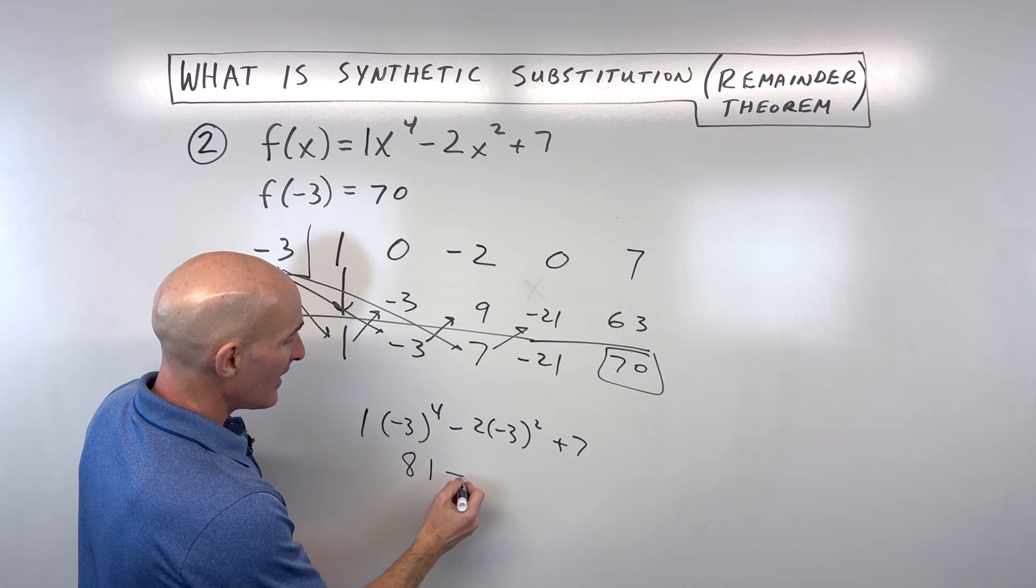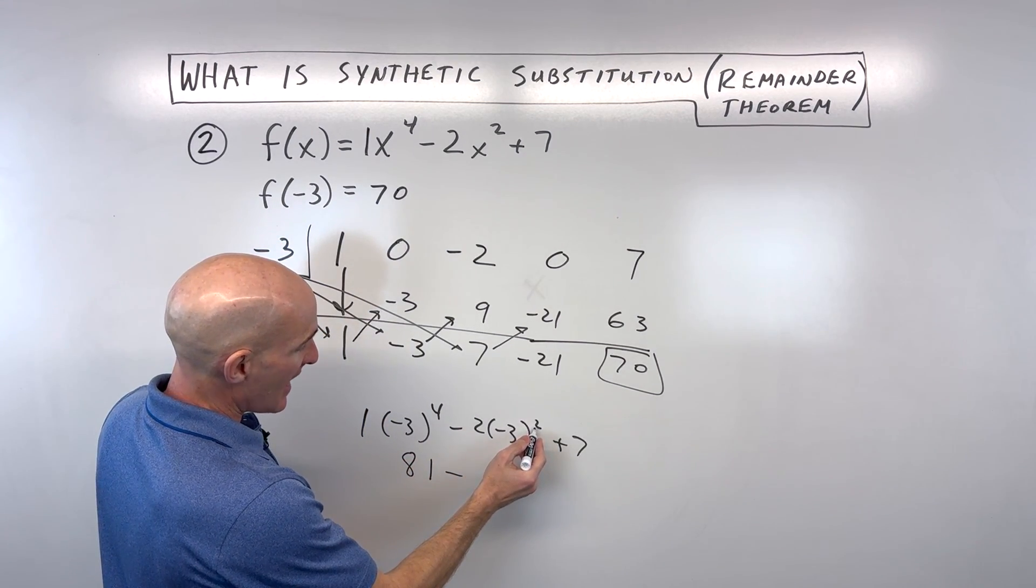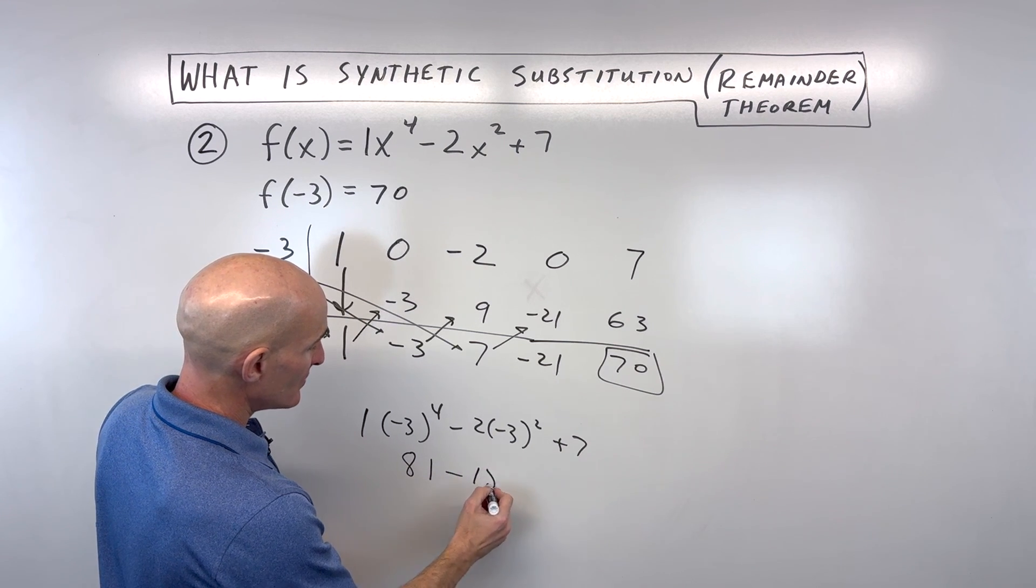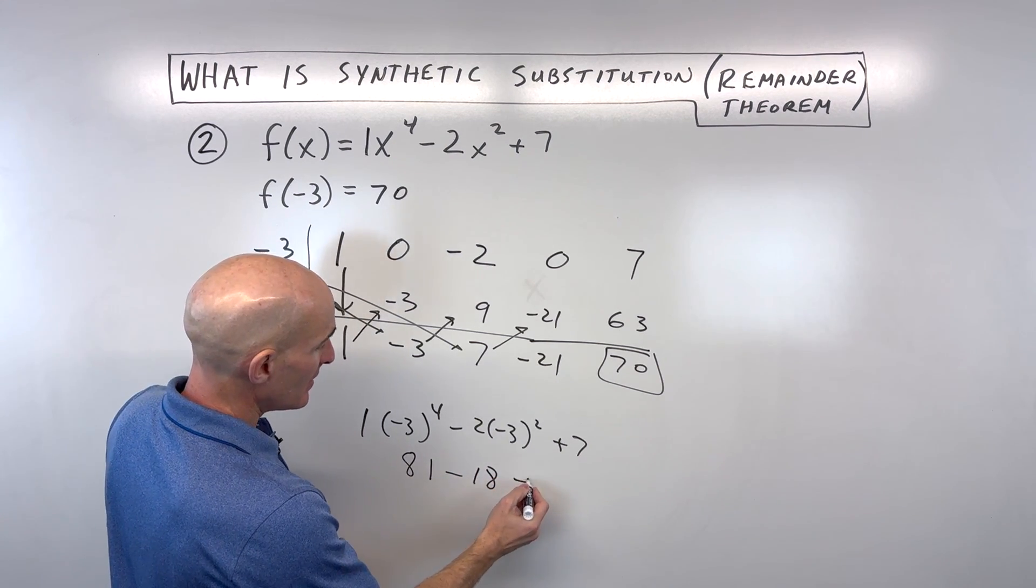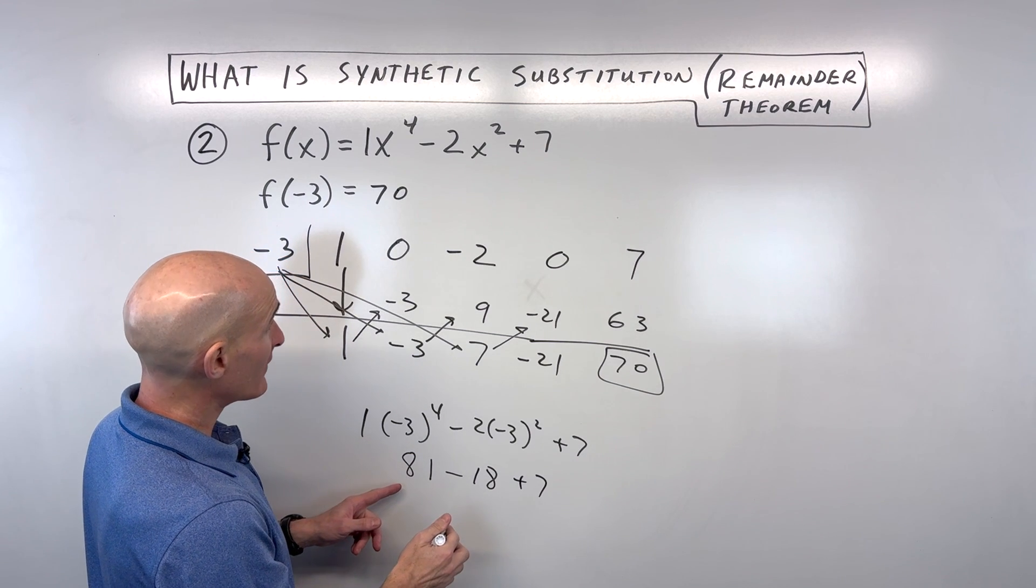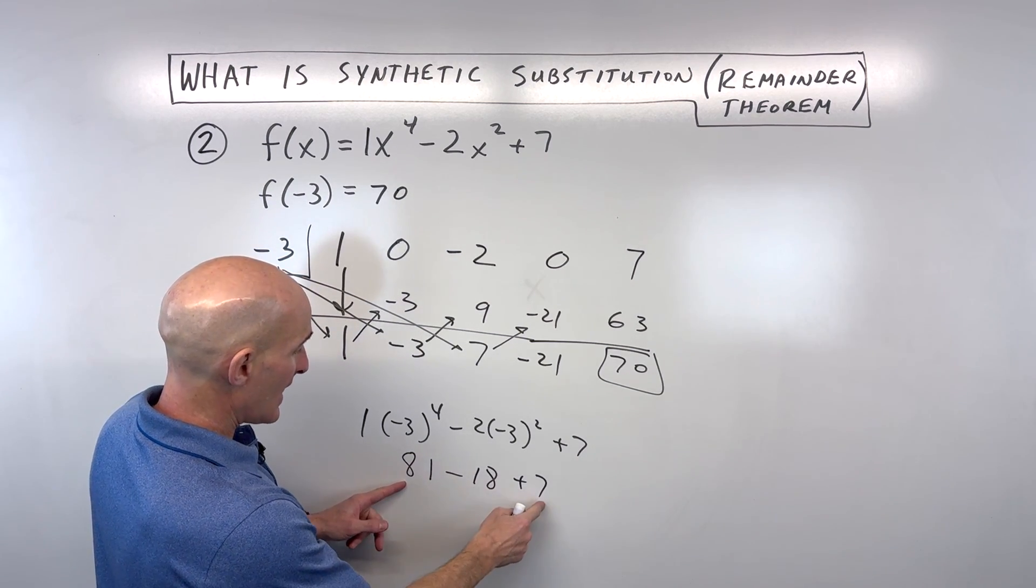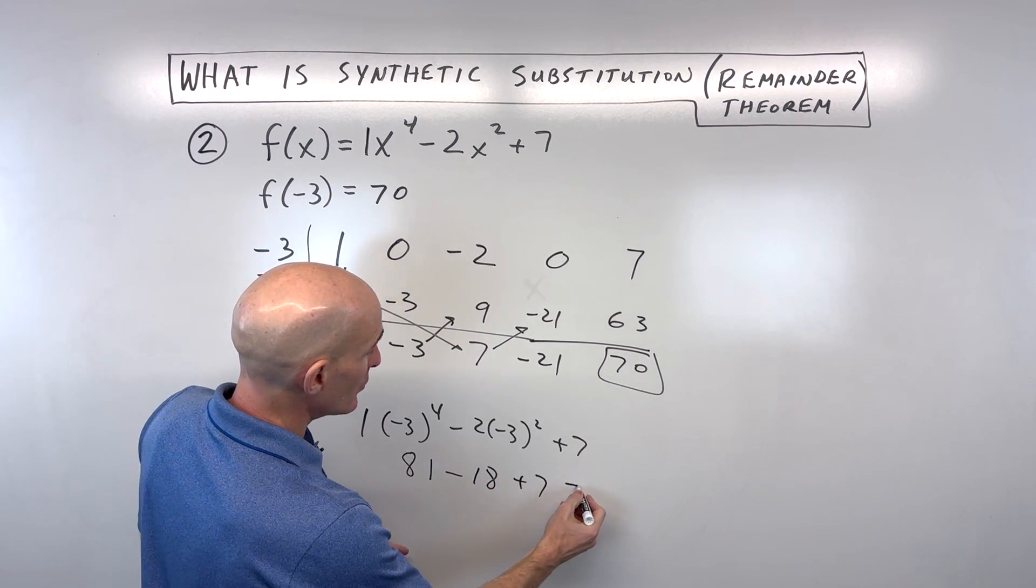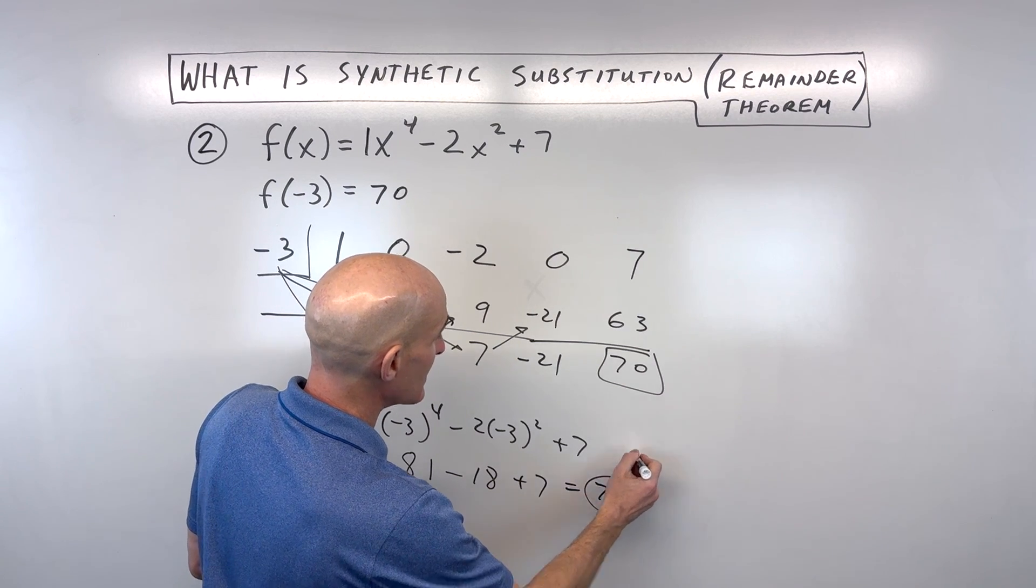Negative 3 to the 4th is negative 3 times negative 3 times negative 3 times negative 3, which is 81. And negative 3 squared is 9 times negative 2 is going to be a negative 18 or minus 18 plus 7. So let's see. What do we get here? We've got 88 minus 18, which is 70. And that's the same thing we got right here.